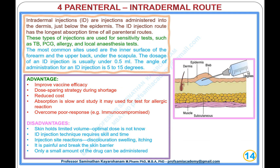The most common sites are the inner surface of the forearm and the upper back under the scapula. The dosage is usually under 0.5 mL and the angle of administration is 5 to 15 degrees. Advantages: improved vaccine efficacy; dose-sparing strategy during shortage; reduced cost; absorption is slow and steady, useful for testing allergic reactions; overcomes poor immune response, for example in immunocompromised patients.